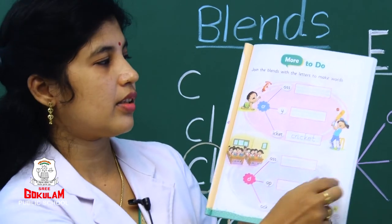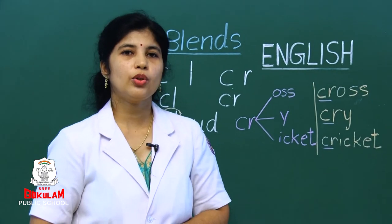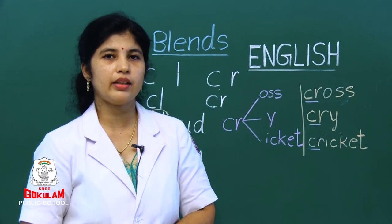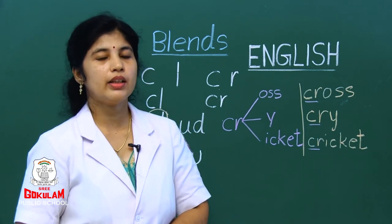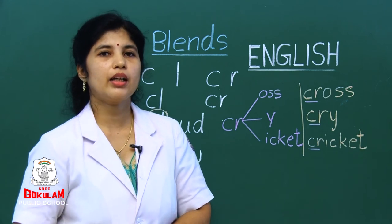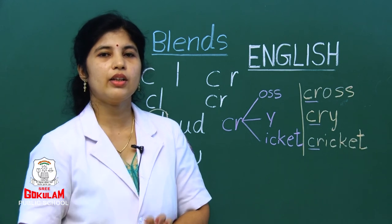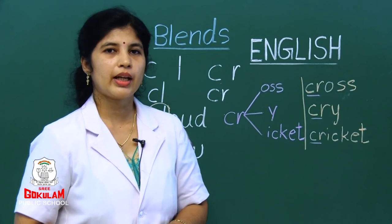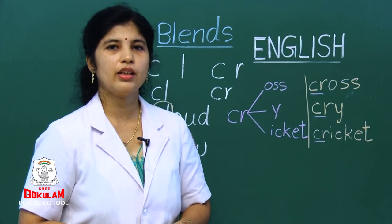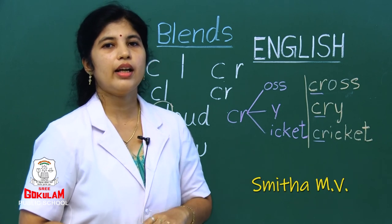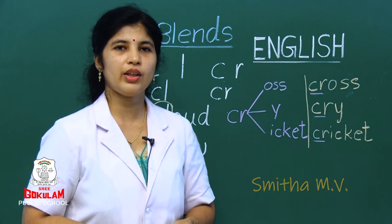So children, what did we learn today? We learned to blend two consonants — beginning consonant blend. You should practice reading and find out the beginning consonant blends. Which consonant blends did we learn? We learned BL, BR, CL, and CR. Practice well. See you next class. Bye bye.